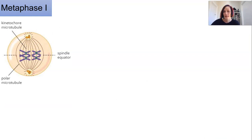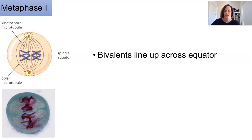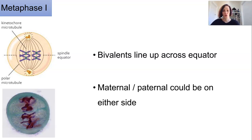In metaphase 1, together the bivalents hand in hand, they're intertwined and they line up across the equator of the cell. There's no rule to which side the paternal or maternal chromosomes go, they just line up together.